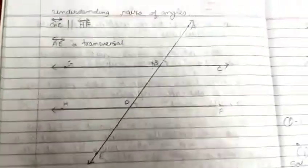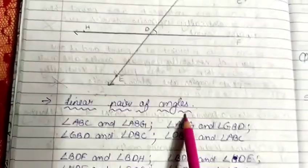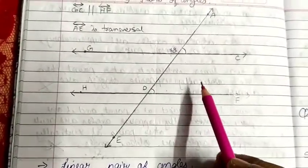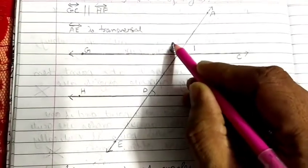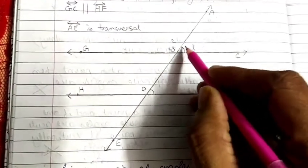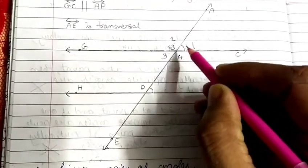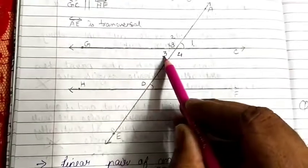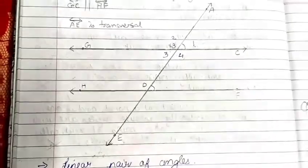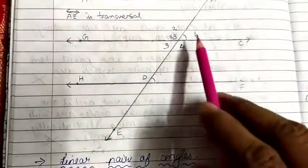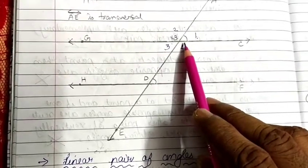The first type is linear pairs of angles. A linear pair means the sum of two angles always gives 180 degrees. If we consider angle 1 and angle 2, their sum gives a linear pair. Similarly, the sum of angles 2 and 3 gives 180 degrees, then 3 plus 4 gives 180 degrees, and angle 4 and angle 1 give 180 degrees. In all, there are 8 linear pairs.